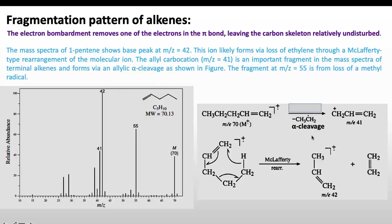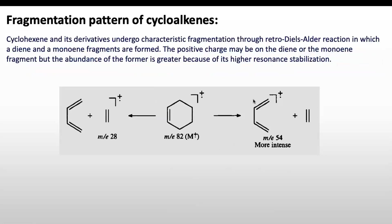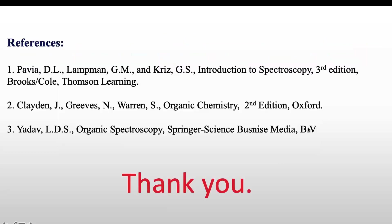Cycloalkenes and their derivatives undergo characteristic fragmentation through a retro Diels-Alder reaction, which we discussed in a previous lecture, forming a diene fragment and a monoene fragment. The positive charge may reside on either fragment, but the abundance of the diene fragment will be greater due to its higher resonance stabilization. Therefore, the diene fragment peak will be the base peak in the case of cycloalkenes. If the positive charge resides on the monoene fragment, a peak for that species will also be observed.